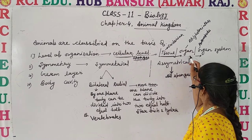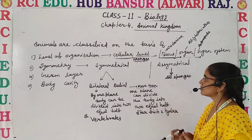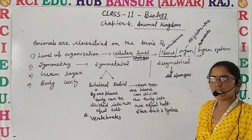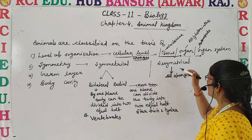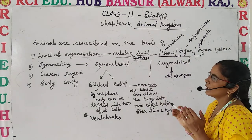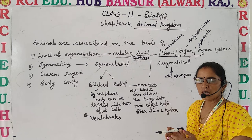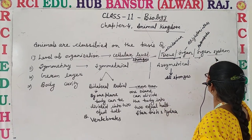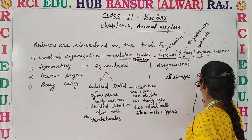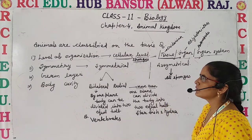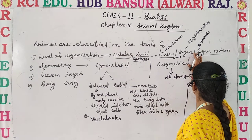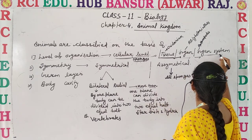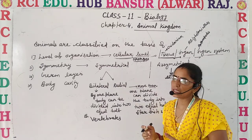If we move ahead, platyhelminthes show organ level of organization — tissues combine to form different organs which perform various functions. Another group, arthropoda, also shows organ system level of organization. So this is about the level of organization.